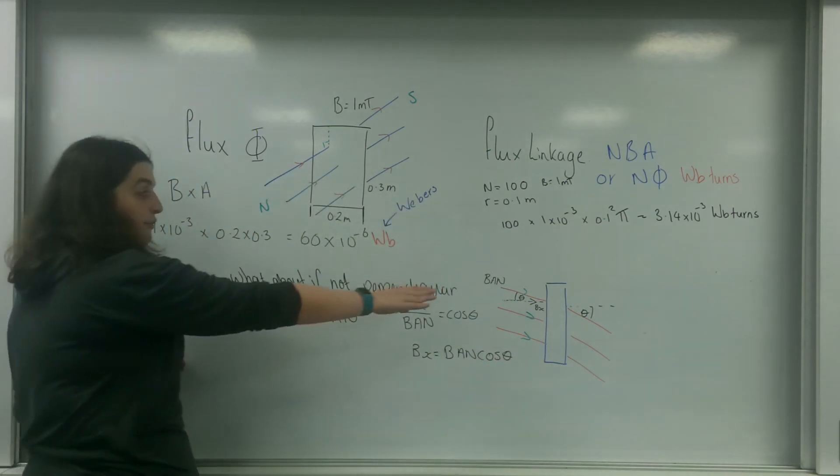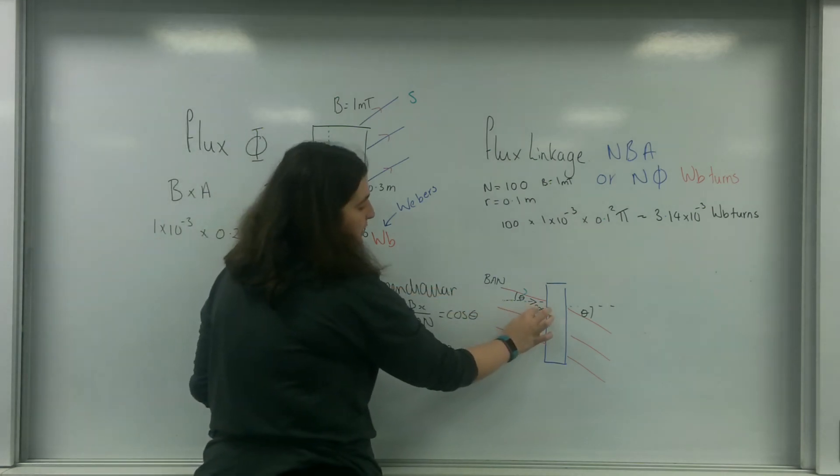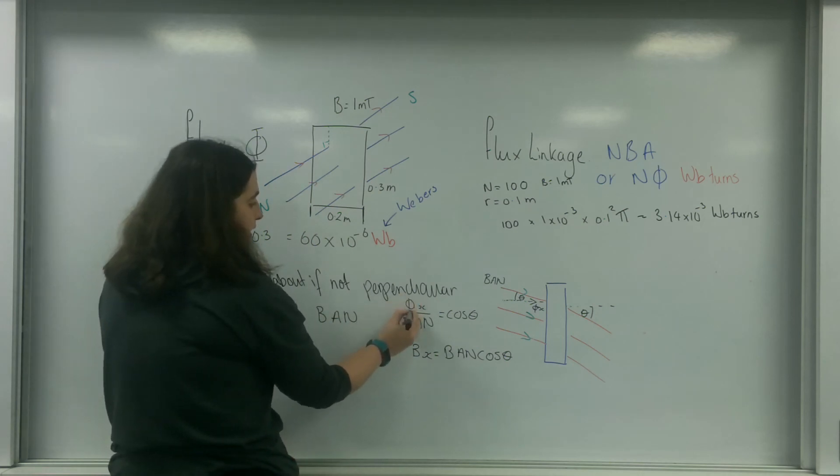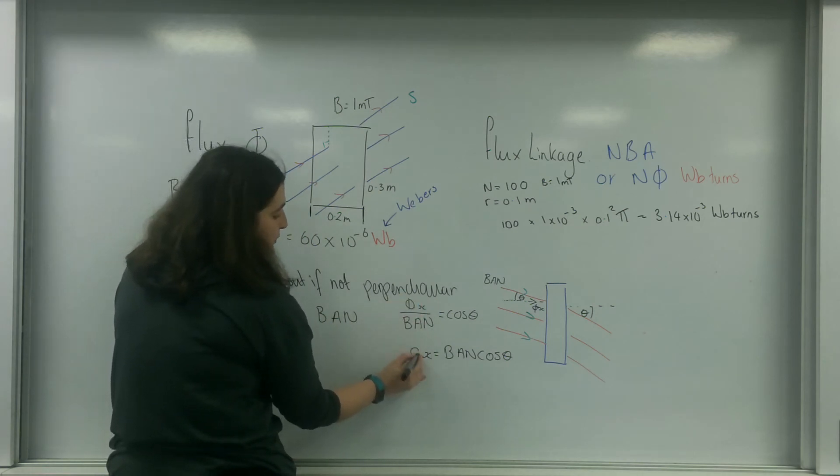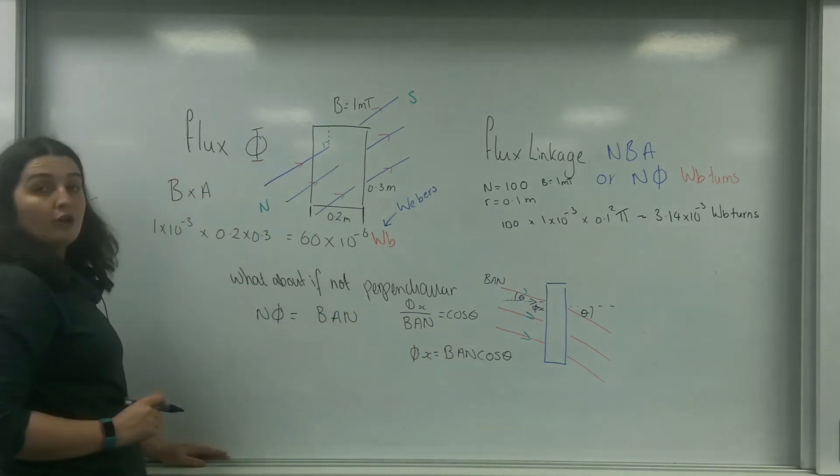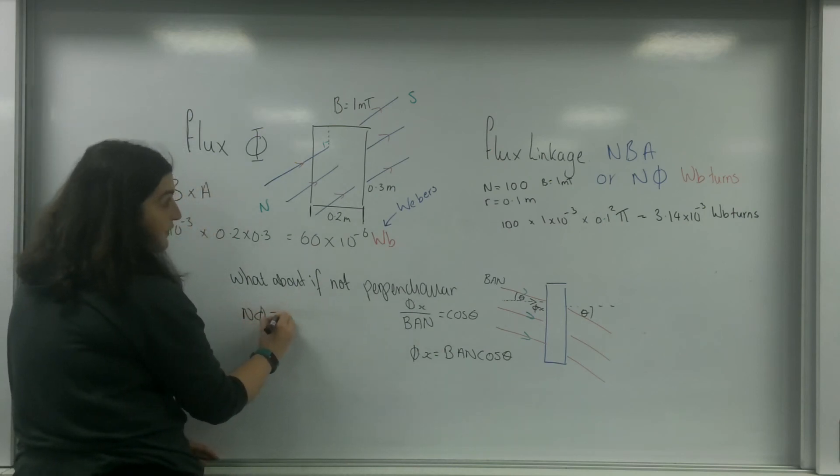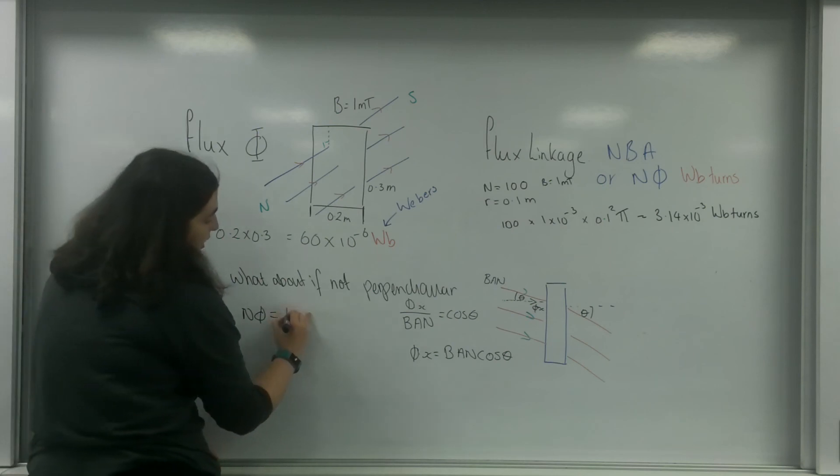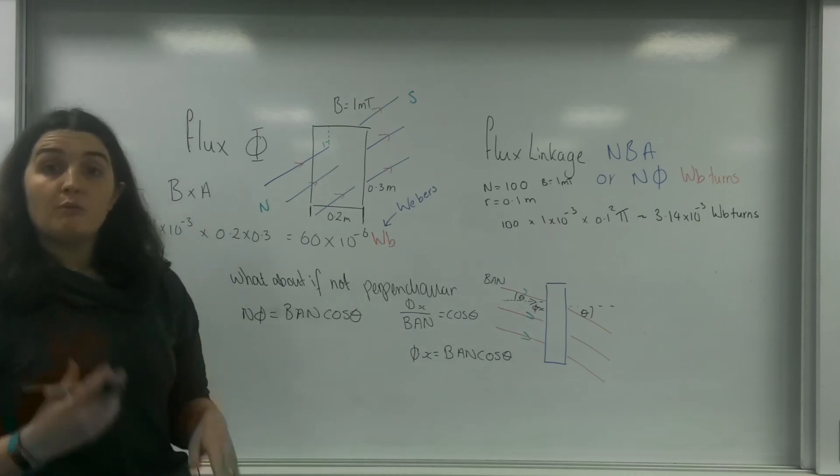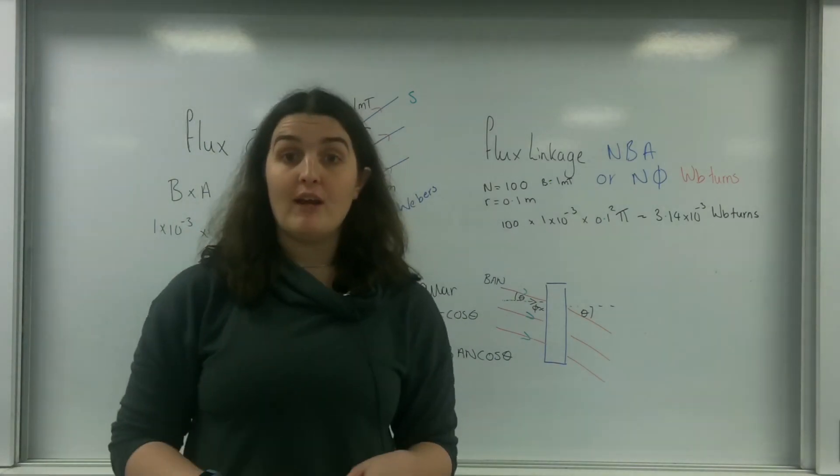So this flux, I'll say phi in the x direction, this flux in the x direction is BAN cos theta. So if it's not perpendicular, my flux linkage is going to be BAN cos theta. And we can use this formula later on in regards to rotating coils and generating EMF.